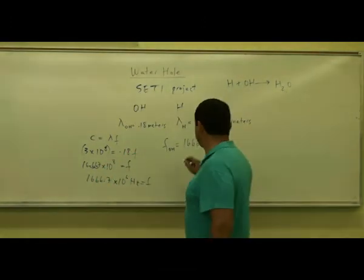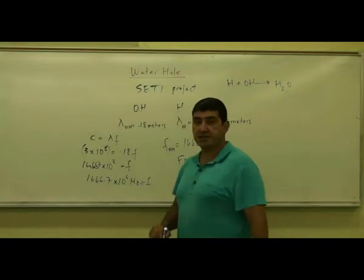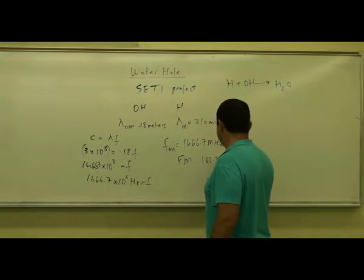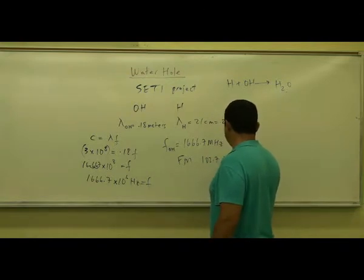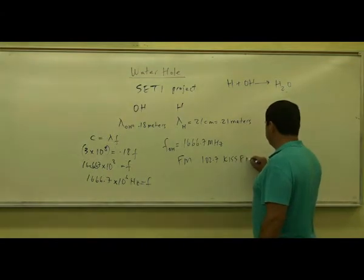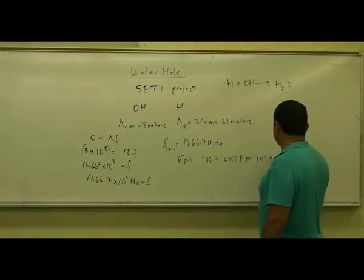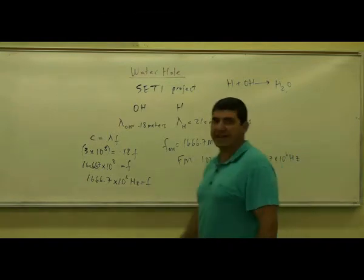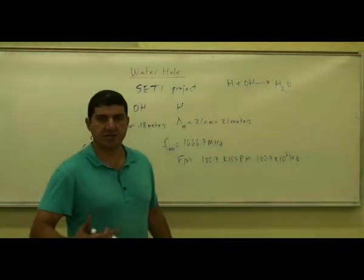Because that's the frequency of FM stations. FM stations are broadcast in megahertz. For example, 102.7 FM, KISS FM means 102.7 times 10 to the sixth hertz. So it's broadcast in megahertz, millions of hertz.